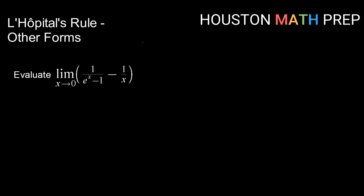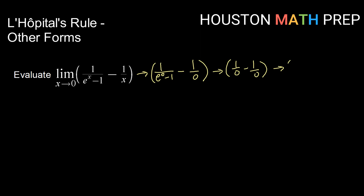Last but not least — what if we get the infinity minus infinity indeterminate form? Here we have the limit as x goes to 0 of 1 over (e to the x minus 1) minus 1 over x. Evaluating, e to the 0 minus 1 gives 0, so we have 1 over 0 minus 1 over 0, which behaves like infinity minus infinity — indeterminate, but not one of the L'Hôpital's rule forms. Since L'Hôpital's rule covers 0/0 or ∞/∞, we want one fraction instead of two, so we'll work to get a common denominator.